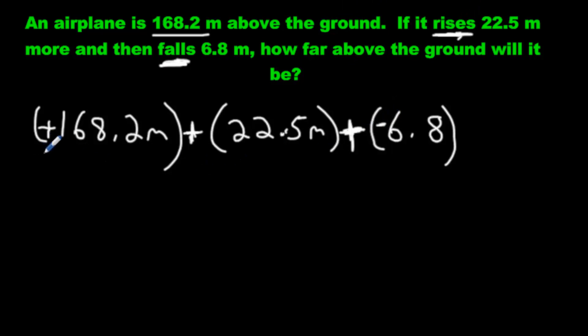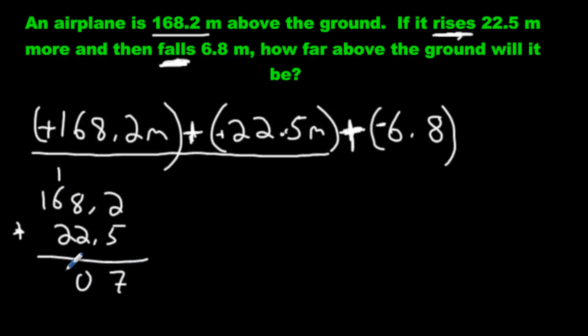Now we can go ahead and do it like any other question we've done so far. This is positive 22.5. We have the first two numbers have the same sign. So we add them. We're going to go 168.2 plus 22.5. See if you can beat me to the answer. 7, 10, 9, 1. We get 190.7. So all of those here, the first two, makes 190.7 meters.